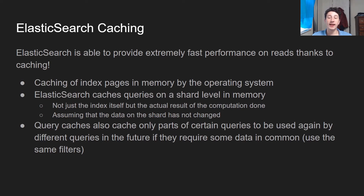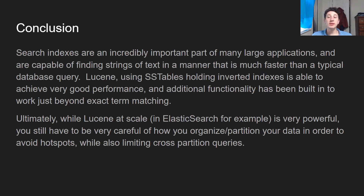Search indexes are a super important part of many large applications. They can find strings of text much faster than a traditional scan over a database using substring logic. Using SSTables in conjunction with an inverted index turned out to be a really good strategy for building a fast search index. Through technologies such as Elasticsearch and Solr, people have been able to scale out Lucene in a manner such that it works in a distributed environment. I'm really happy I made this video because I personally have looked like a bozo in the past when bringing up search indexes and not knowing exactly how they were implemented. Hopefully you guys don't make the same mistake — I'll see you in the next one.